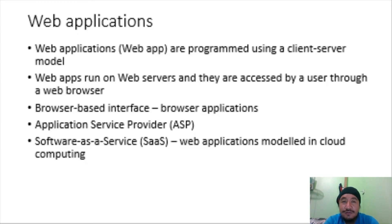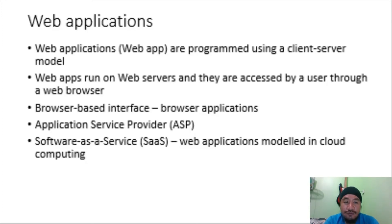An emerging strategy for software companies is to provide web access to software previously distributed as local applications. Looking back at the history of software distribution, we have what we call off-the-shelf software, wherein an application is distributed as a local application — you download it and install it locally on your device. Today, there is a strategy for application software companies of providing web access to the software they develop. A company which follows such strategy is known as an application service provider, or ASP.